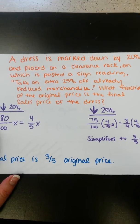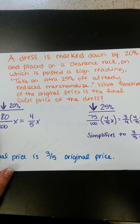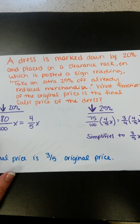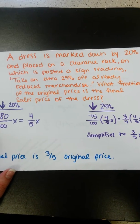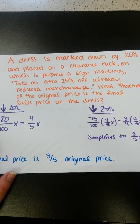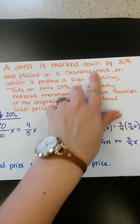a dress is marked down by 20% and placed on a clearance rack on which is posted a sign reading, take an extra 25% off already reduced merchandise. What fraction of the original price is the final sales price of the dress?